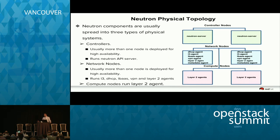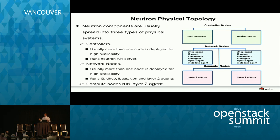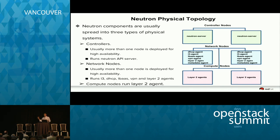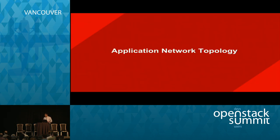In an OpenStack deployment, there is ideally a set of controller nodes, a set of network nodes, and a bunch of compute nodes. The controller nodes run the API services, database service, and message queuing service. The network nodes run the DHCP agent and all other Neutron agents. All compute nodes run compute-related services as well as the Neutron Layer 2 agent. Our focus today is on the network nodes and compute nodes, and what happens inside them when we build network topology for our application.